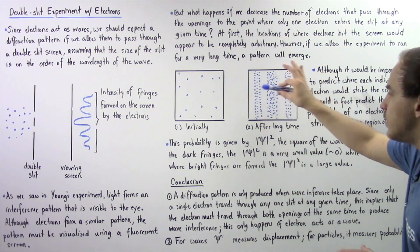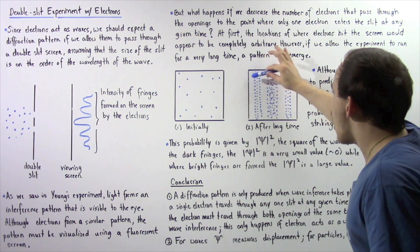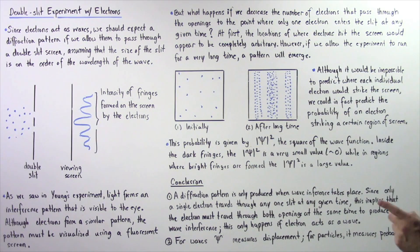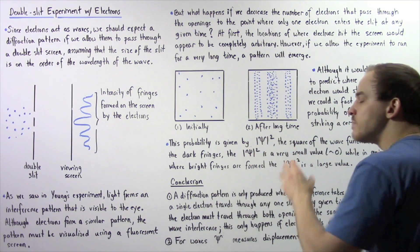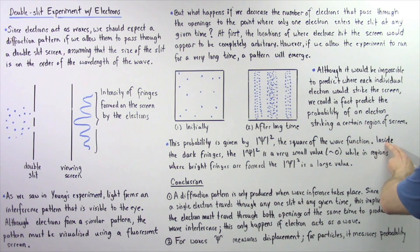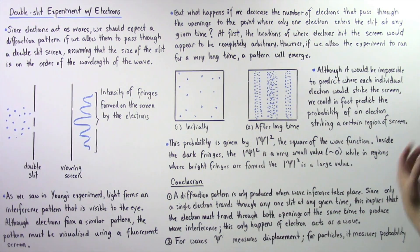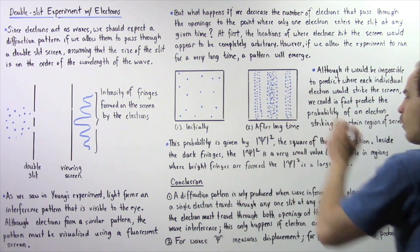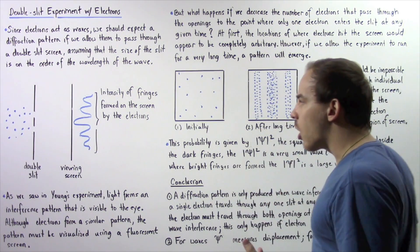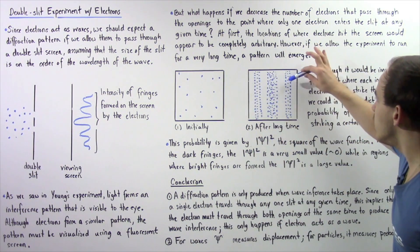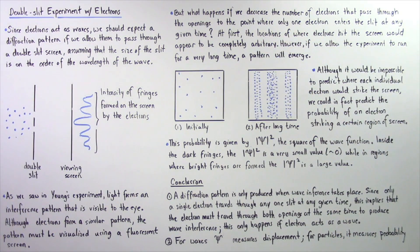As these fringes form, most electrons are hitting the bright fringe regions, and very few are hitting the dark regions. This probability is given by taking the wave function ψ and squaring it, which is known as the probability density. Inside the dark fringes, the probability density is very small — approximately zero — while in the regions where bright fringes are formed, ψ², the wave function squared, is very large. There is a very high probability that electrons will hit the bright regions, and a very small probability they will hit the dark regions.